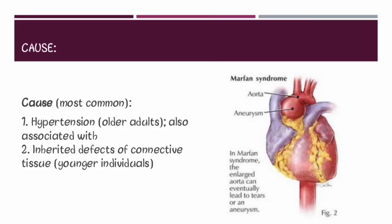Now let's discuss the causes of aortic dissection. The most important causes are hypertension and inherited defects of connective tissue. In older adults aged 40 to 60 years, hypertension is the most important cause. Let's discuss how hypertension leads to aortic dissection.